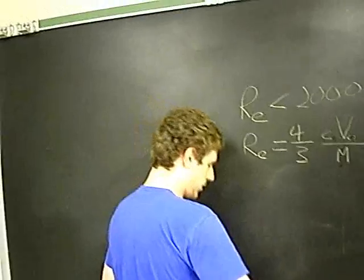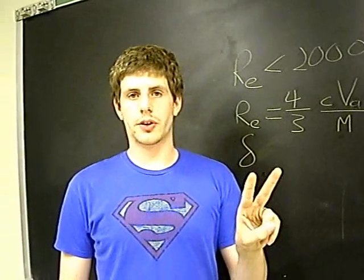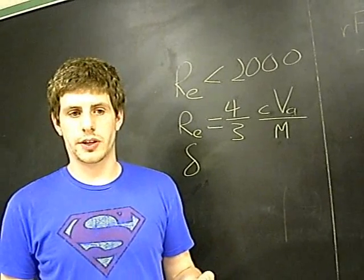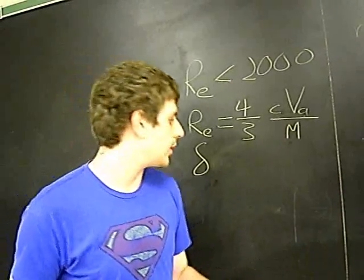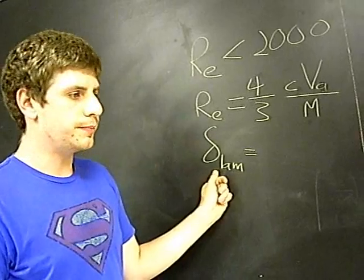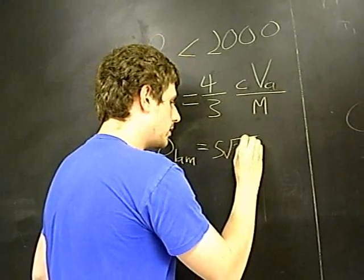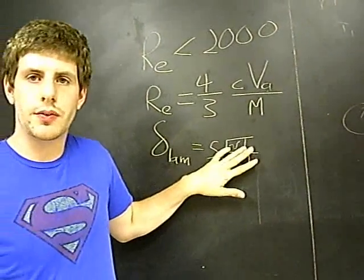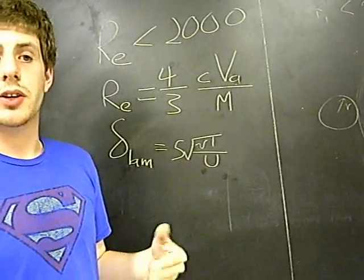We also have the boundary layer given by small delta. There's two boundary layer equations, one of which I'll discuss because that is most important: the laminar boundary layer. The laminar boundary layer, symbolized by little delta, is equal to 5 times the square root of nu times 1 over u, where nu is the kinematic viscosity of the working fluid, and u is the inlet flow velocity of the inlet that you're using to power the turbine.